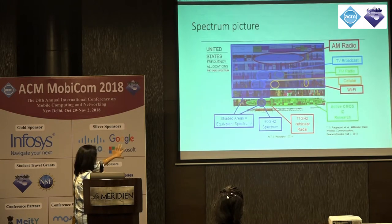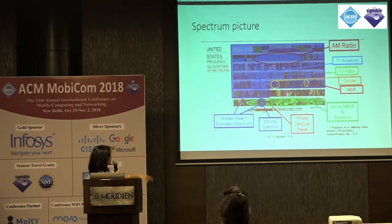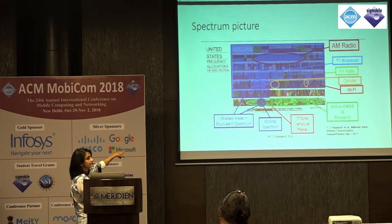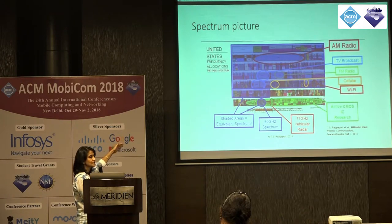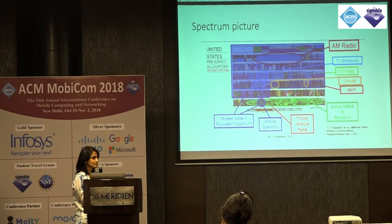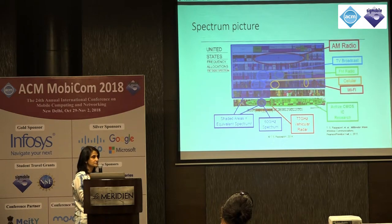Looking at the US frequency allocation chart from baseband all the way up to terahertz and beyond — the 60 GHz unlicensed spectrum has about 14 GHz available, which is equivalent to all the spectrum we have for commercial services below that. This tells you we've achieved enormous communication capability given the lower band spectrum allocated. But to really push forward, we need to look for new spectrum. Millimeter wave is where you find clean spectrum not already allocated to other services.